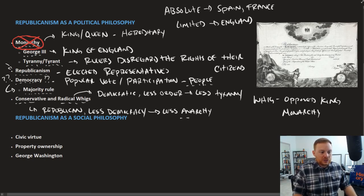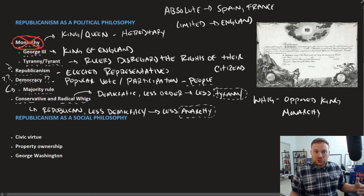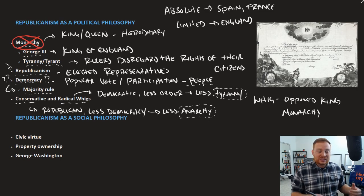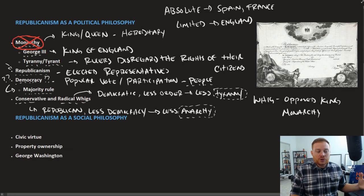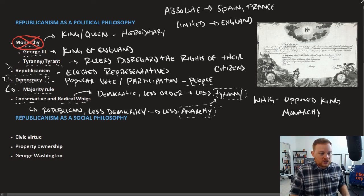This balance between tyranny and anarchy is a really good way of understanding what individuals like Benjamin Franklin and John Adams were going through at this time — how to create a government democratic enough to avoid tyranny, but not so democratic that it leads to anarchy. The question was: can we get something in between these two things?